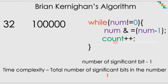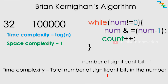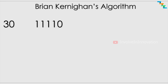In the brute force solution, the time complexity is proportional to the total number of bits present in the number. With Brian Kernighan's algorithm, the time complexity is proportional to the number of significant (set) bits present in the number. The time complexity is O(log n) and space complexity is constant.